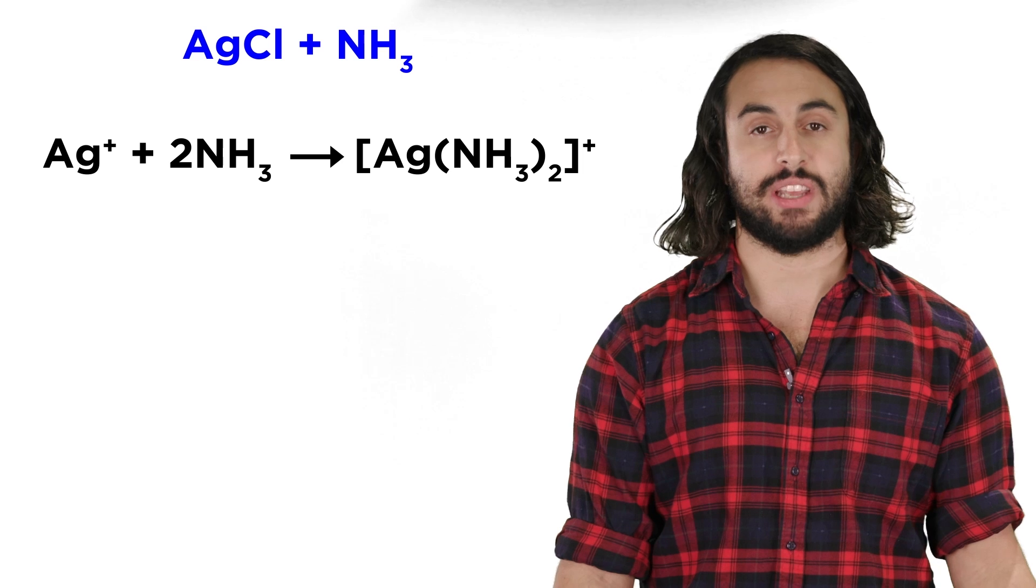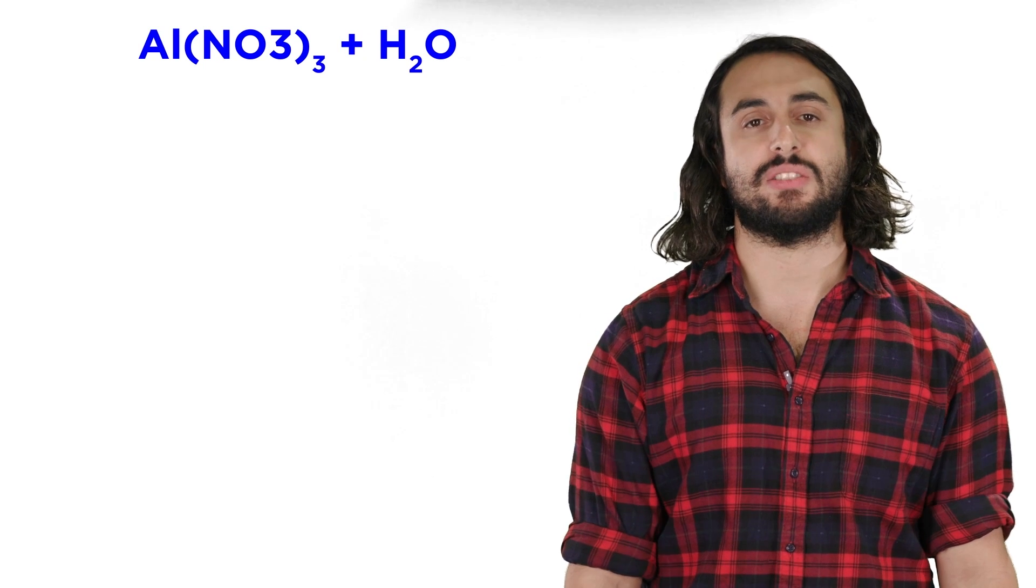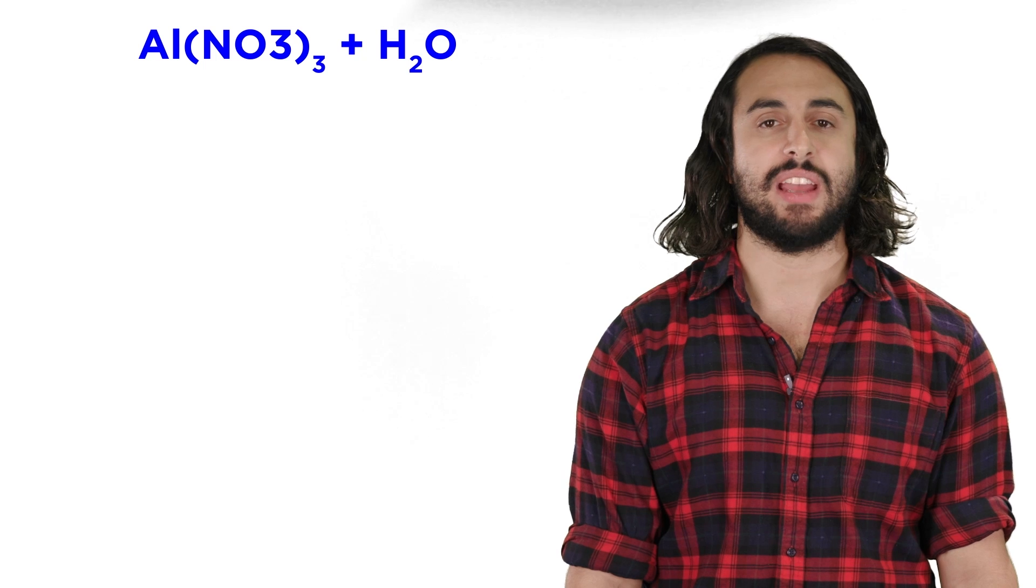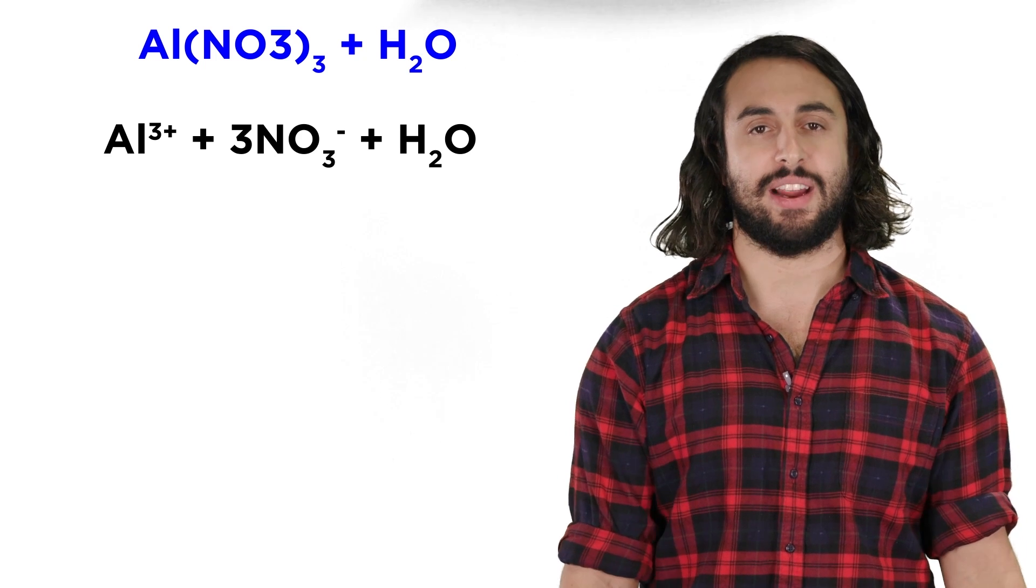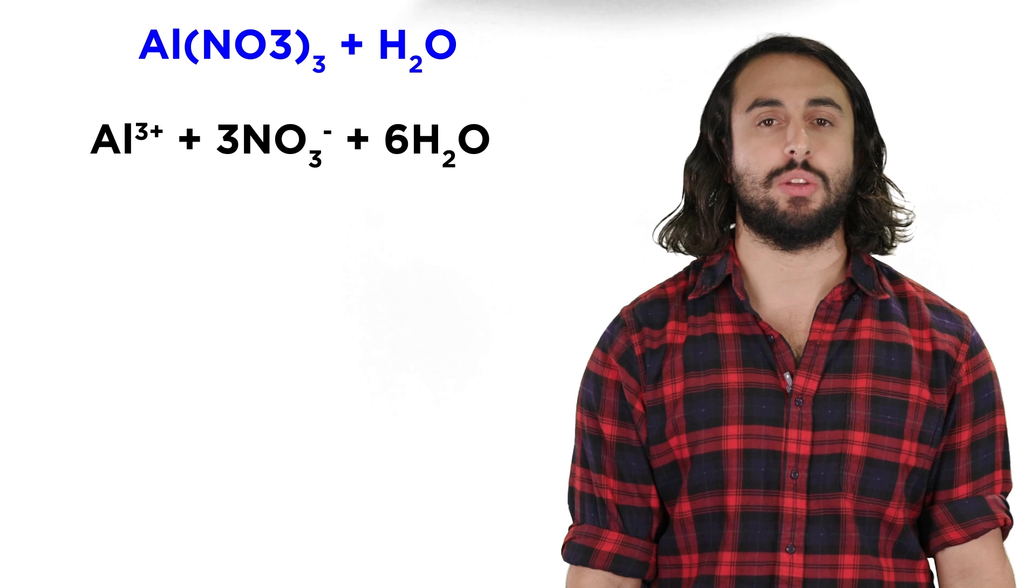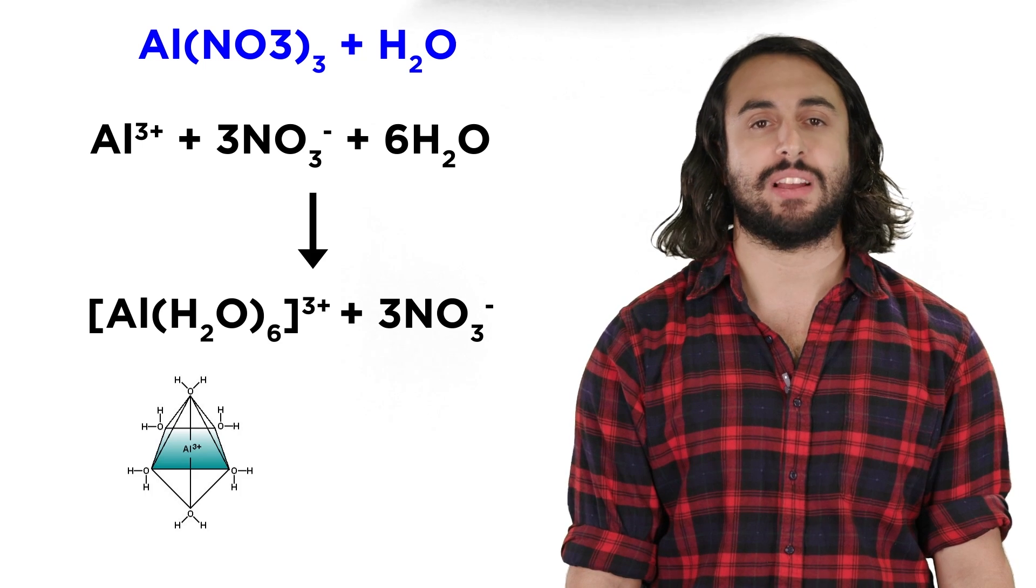This doesn't happen only in ammonia. This can happen in water as well. If aluminum nitrate is dissolved in water, it will dissociate to form aluminum 3+ ions and nitrate ions. But six water molecules can coordinate to each aluminum ion to form the following complex ion.